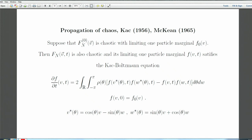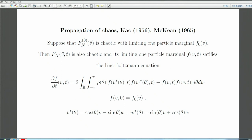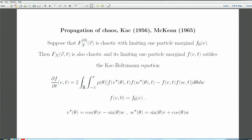This is what Kac proved in 1956. He made the remark that the time evolution here is totally linear — everybody knows how to handle that — and therefore worrying about the existence of a solution to such a nonlinear equation isn't very interesting. So: you start with chaotic initial data, fix time t, evolve, get another chaotic sequence whose one-particle marginal satisfies the Kac-Boltzmann equation.